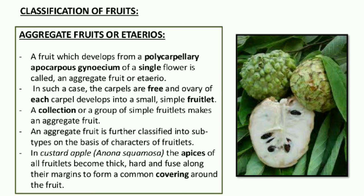An aggregate fruit is further classified into subtypes on the basis of the character of fruitlets. In custard apple, known as Annona squamosa, the apices of fruitlets become thick and hard and fuse along their margins to form a common covering around the fruit. You can see in the diagram — the complete structure is one aggregate fruit containing many fruitlets. Each fruitlet unit contains a seed with epicarp, mesocarp and endocarp. These are the aggregate fruits or aeterios.